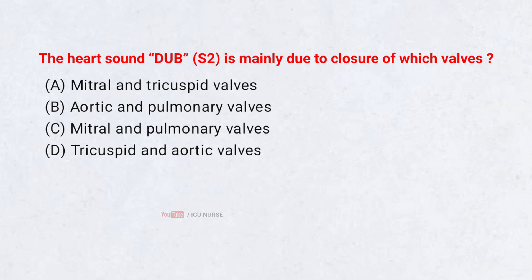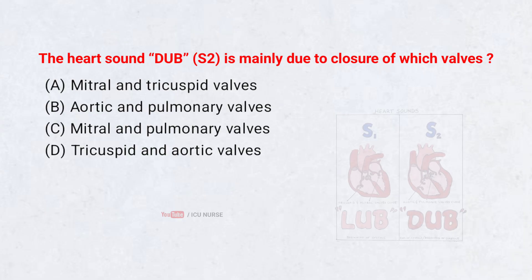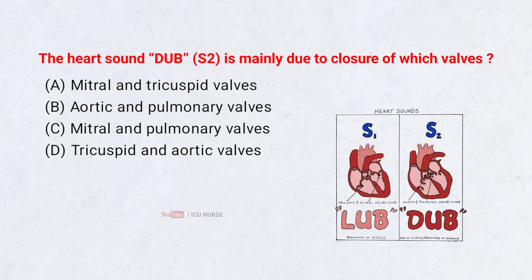The heart sound 'dub' is mainly due to closure of which valves? Correct answer B: Aortic and pulmonary valves.